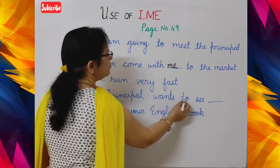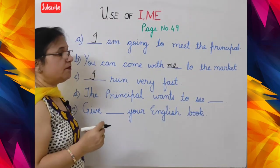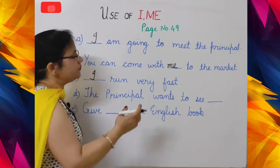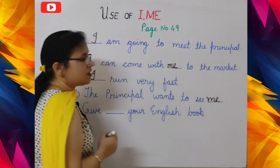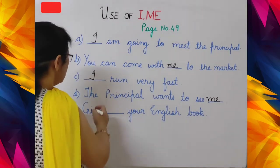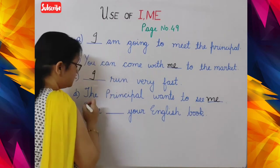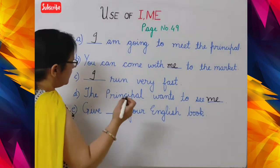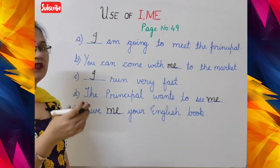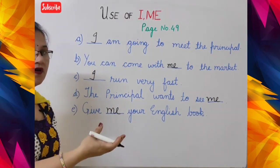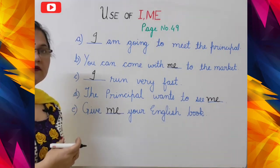The principal wants to see dash. Here the verb is 'see' and the blank is after the verb, so 'me' will come here. The principal wants to see me. Next: 'Give dash your English book' — the verb is 'give', so 'me' comes after it: 'Give me your English book'. If the blank is after the verb, 'me' will come. If the blank is before the verb, 'I' will come.